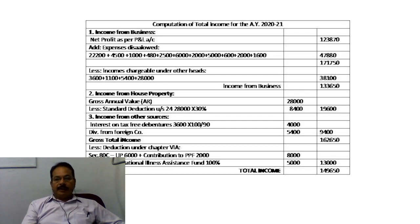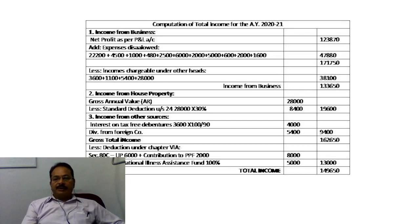The total disallowed expenses come to 47,880. Adding this to net profit, the total comes to 1,71,750.